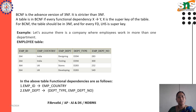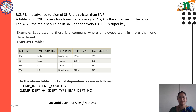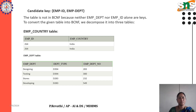For example, let's assume there is a company where employees work in more than one department. The employee table contains: employee ID, employee country, employee department, department type, and employee department number. The functional dependencies are as follows: employee ID determines employee country, and employee department determines department type and employee department number.